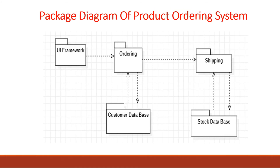Now we will see an example of a Package Diagram and also learn its components. Here we have taken the example of an order management system, meaning products that you order online. In this diagram, all the rectangle boxes are packages, and the names of packages are written on the inside of the boxes. UI Framework, Ordering, Shipping, Customer Database, and Stock Database — all these are packages.